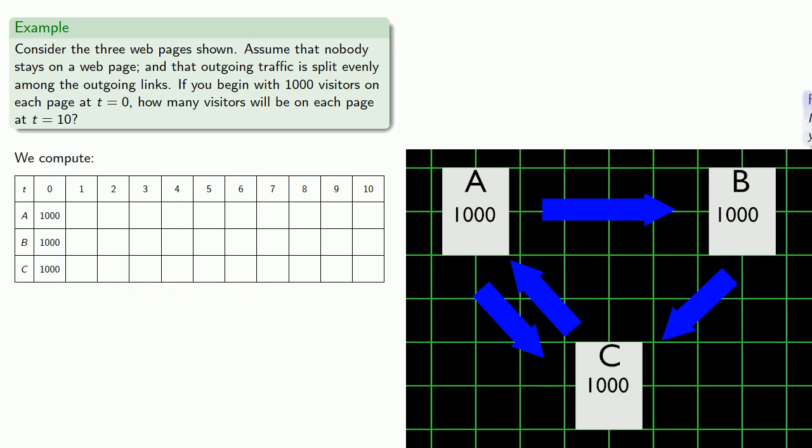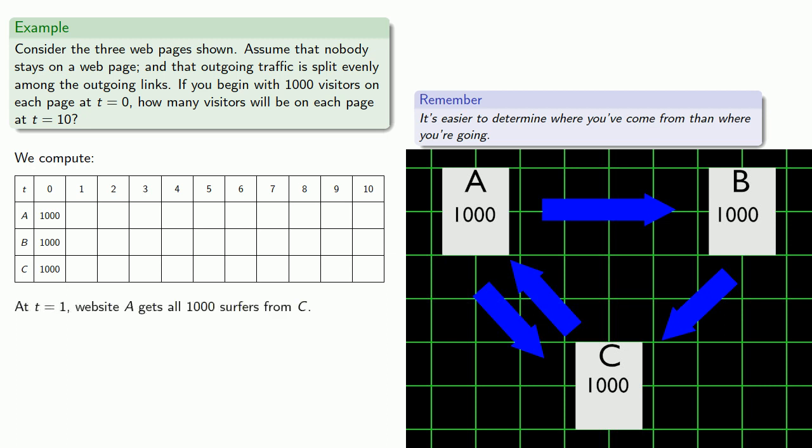The important thing to remember is that it's easier to figure out where you've come from than where you're going. Let's consider the people who end up at the three different web pages. At t = 1, website A is going to get all 1,000 surfers from website C, because the only outgoing link from C goes to website A. Now to keep us from miscounting, it helps to think about these surfers as leaving C and en route to A. They're in the wilds of the information superhighway, and the data packet is asking, are we there yet?